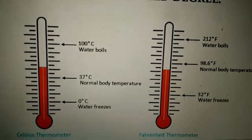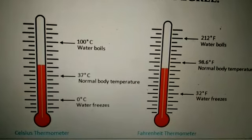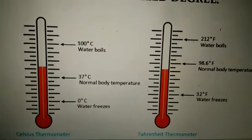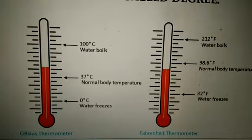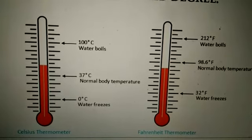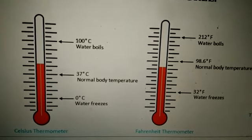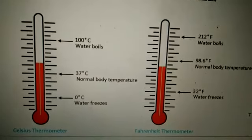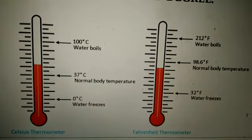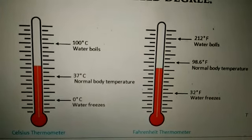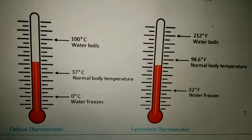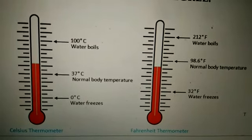On the right side is the Fahrenheit thermometer having a Fahrenheit scale. The 212 degree Fahrenheit is the point at which water boils, and 32 degree Fahrenheit is the point at which water freezes. In Fahrenheit, the normal body temperature is 98.6 degree Fahrenheit.